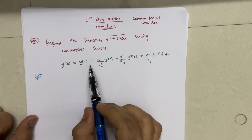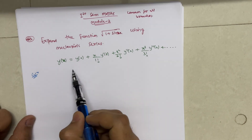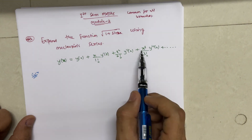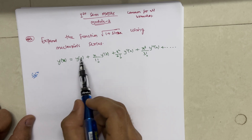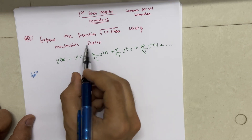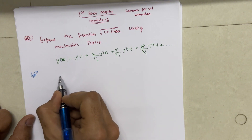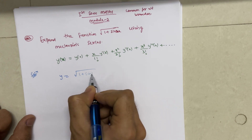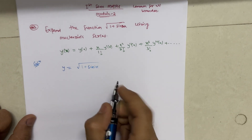This formula has its own proof — it is derived from the Taylor series itself. You don't have to remember the background; simply the formula will be given in your handbook, or it is easy to remember. Now let us solve this particular question. The given function is 1 plus sin 2x, which we can write as y = √(1 + sin 2x).